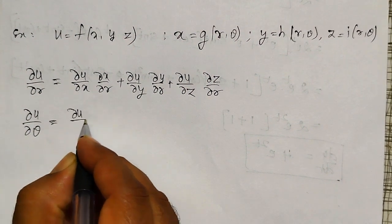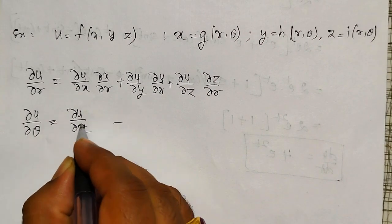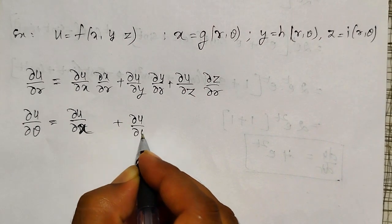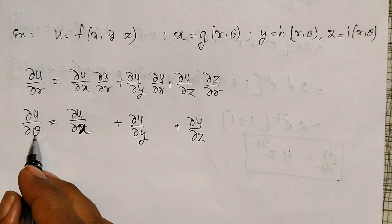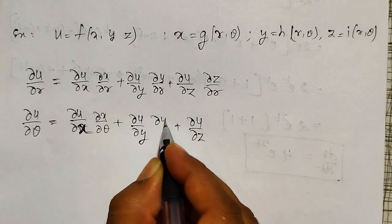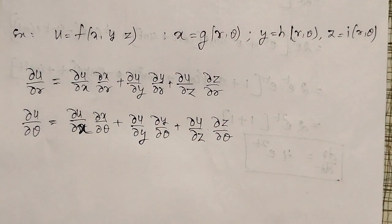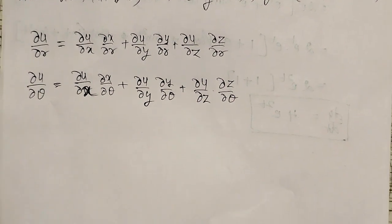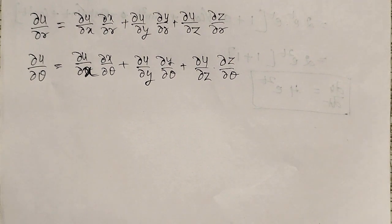For ∂u/∂θ: ∂u/∂θ = (∂u/∂x)(∂x/∂θ) + (∂u/∂y)(∂y/∂θ) + (∂u/∂z)(∂z/∂θ). Like that I can write. One more type may exist, which I will also discuss. Here x, y, z are depending on r and θ, but x, y, z may instead be depending on three variables r, θ, and t — then how do we write it?